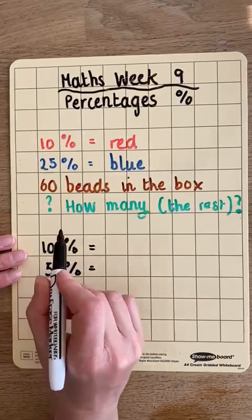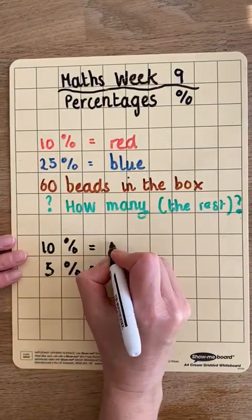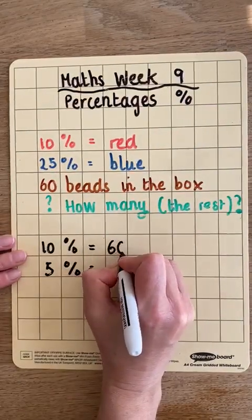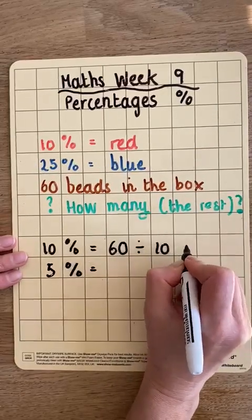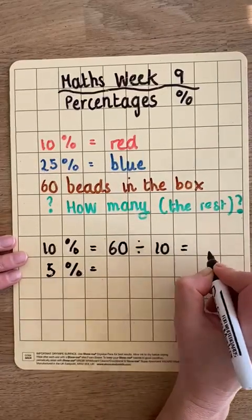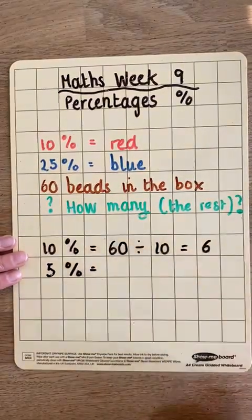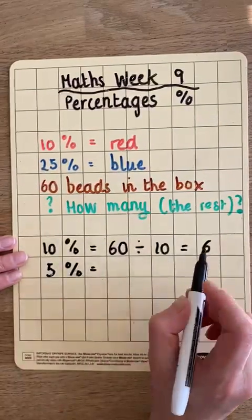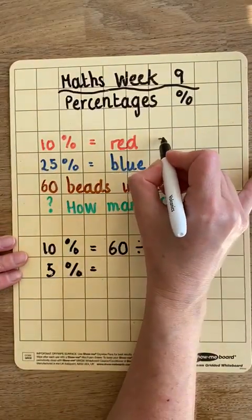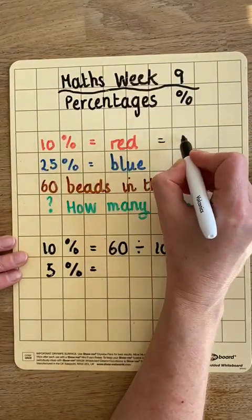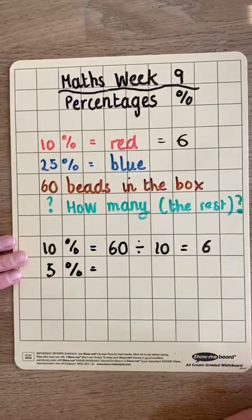To find 10% we need to take our total, 60, and divide it by 10. That gives us 6. So 10% is 6, which means the value of the red beads is 6. There are 6 red beads.